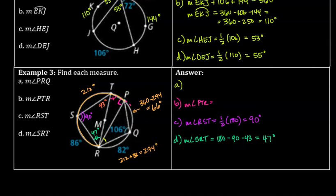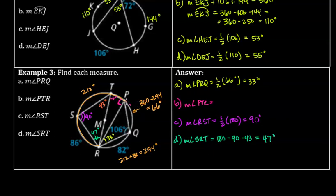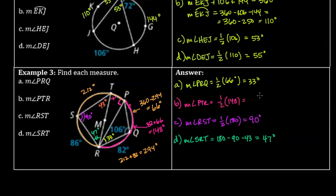Since arc PQ is 66 degrees, angle PRQ — its inscribed angle — is half of 66 = 33 degrees. Now for angle PTR: the arc it intercepts is 82 + 66 = 148 degrees. So the measure of angle PTR = half of 148 = 74 degrees.